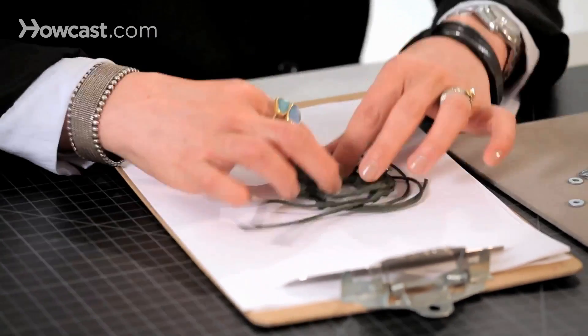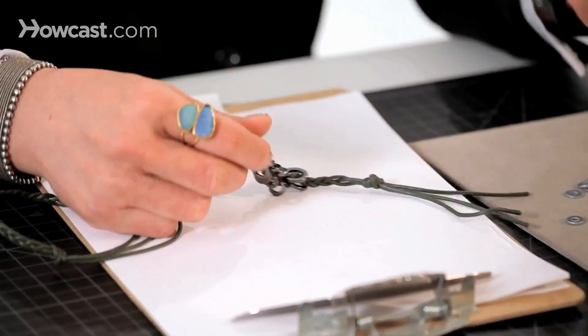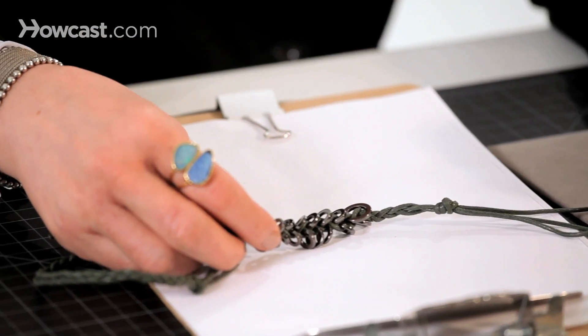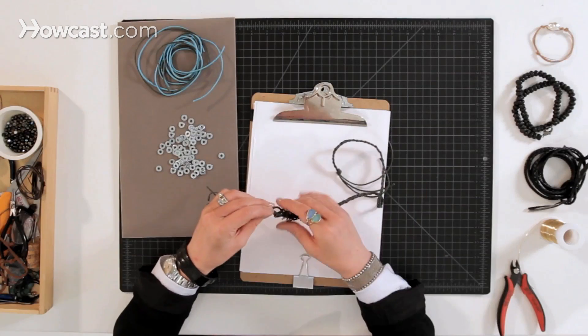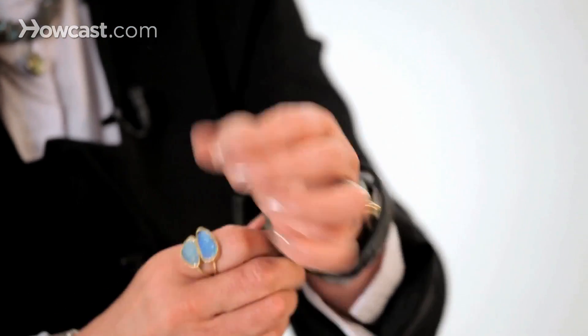So these I actually got from the hardware store. These are actual jump rings from the jewelry supply. So you can actually use anything as long as it has a hole in it that your string will go through. So basically it's a braided bracelet and you wear it like this, another fun summer bracelet.